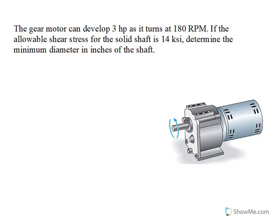Hello again. I'm here with another video, this time related to power transmission and the relation of power to torque and angular speed, and calculating based on the material property of this shaft, determining the diameter. So here it says the gear motor can develop 3 horsepower as it turns at 180 RPM.